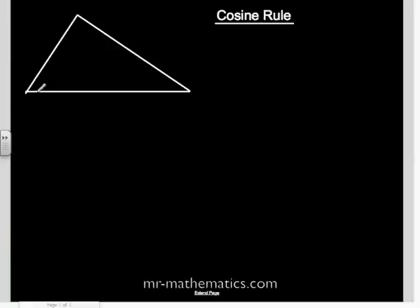We are going to derive the cosine rule for a non-right-angle triangle.